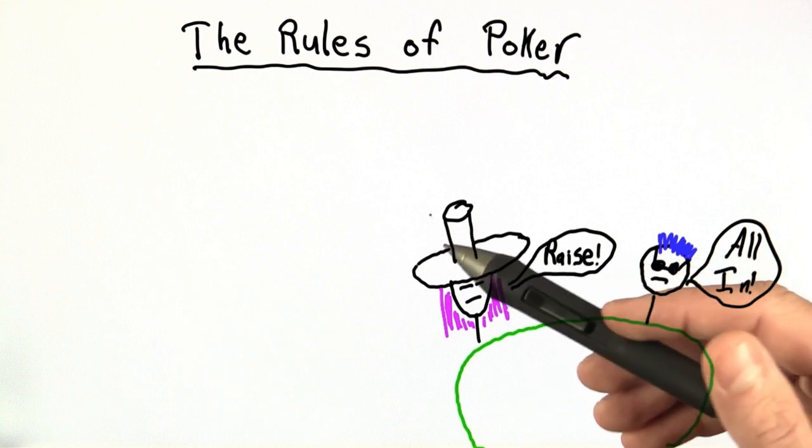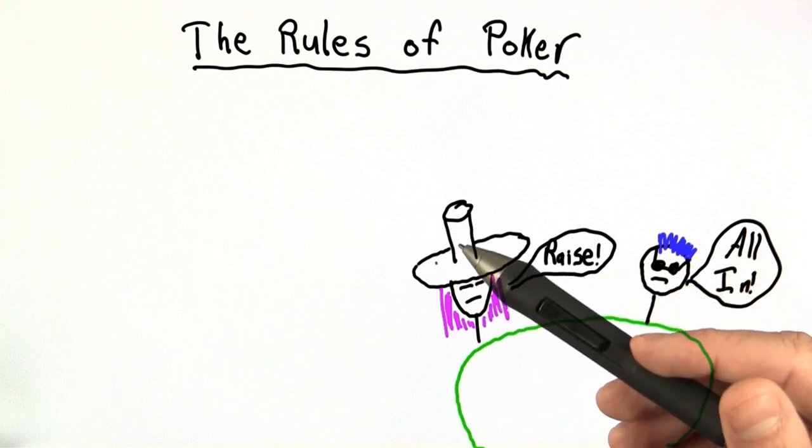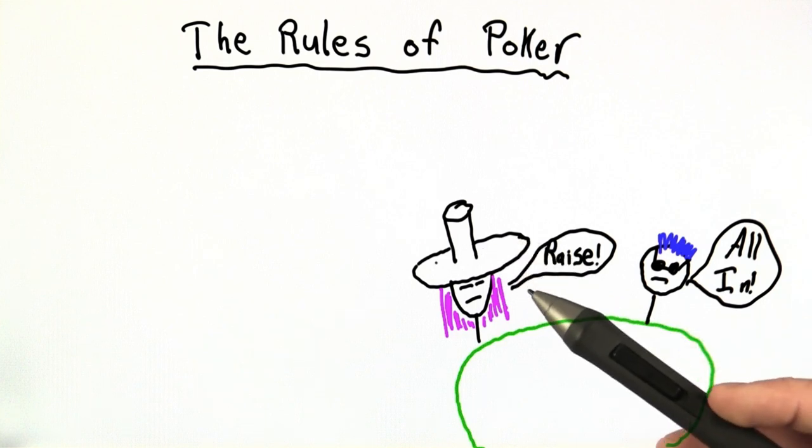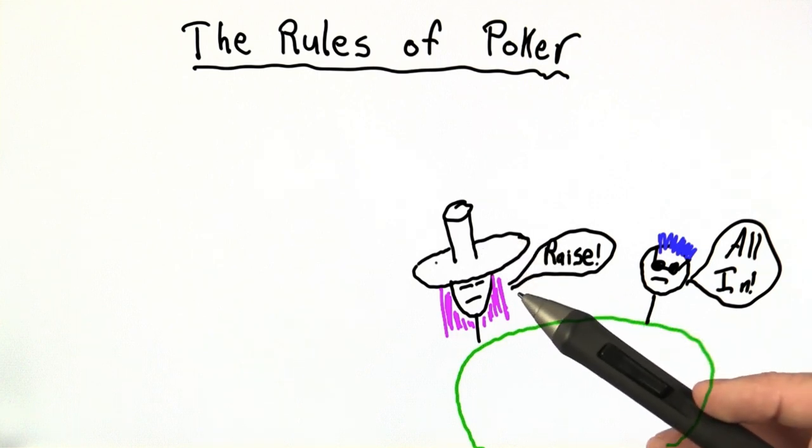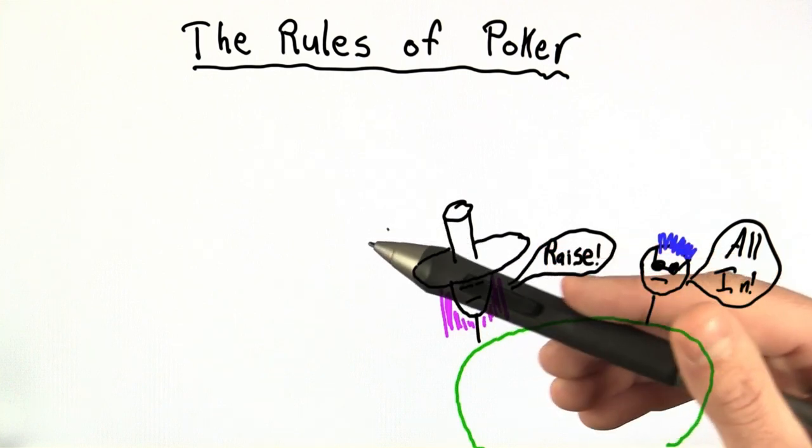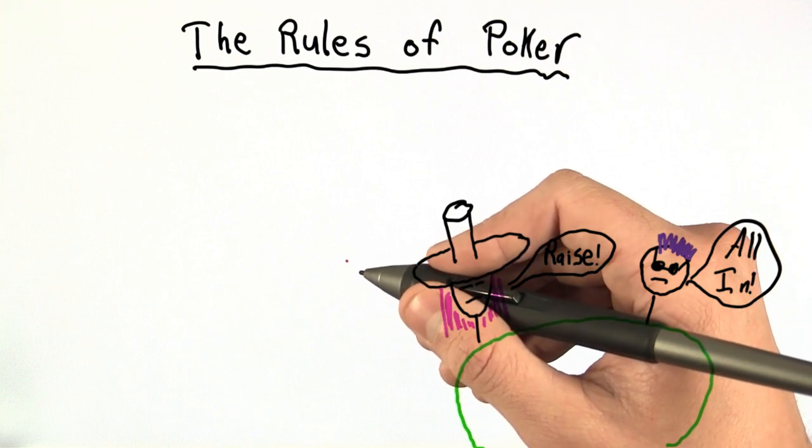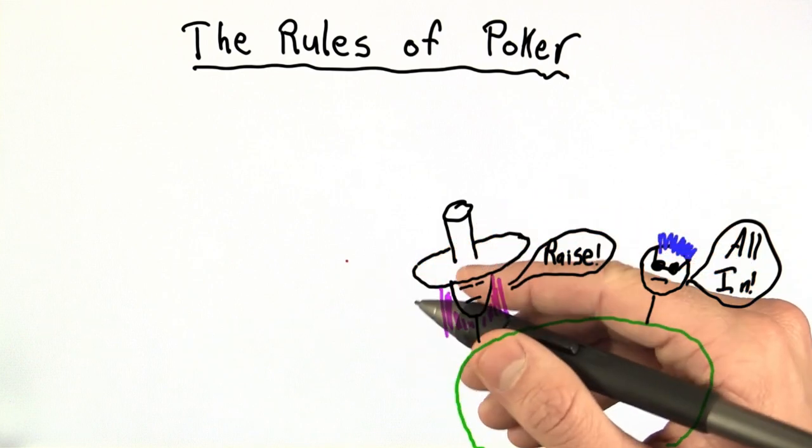But for the purposes of this unit, we only need to know the most basic aspect of poker. And this aspect is common to every single variation of poker, and that's how hands are ranked. Because at the end of the day, all of these different versions of poker have to do with making the best five-card hand that you can. These different hands each have different names, and there are nine of them.